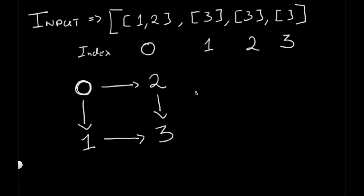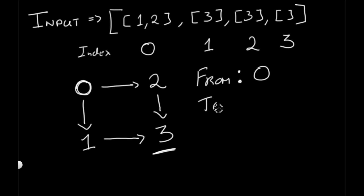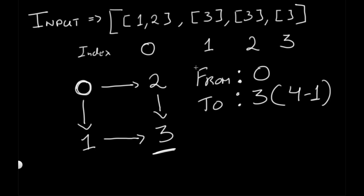Now let's understand what the question wants from us. We need to find all possible ways to get from node 0 to the last node, which is n minus 1. In this case that's node 3, since our input has a length of 4 and 4 minus 1 equals 3. So we need to find all the ways to get from node 0 all the way to node 3.